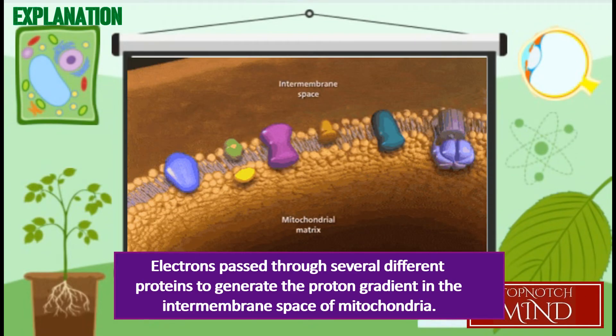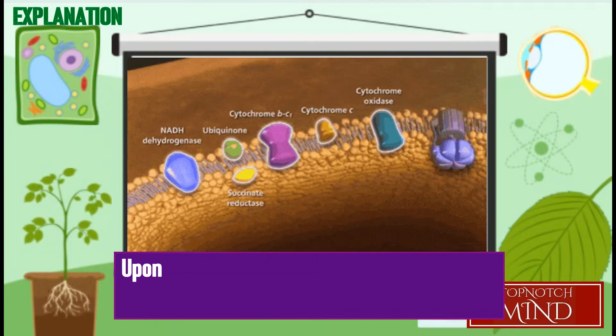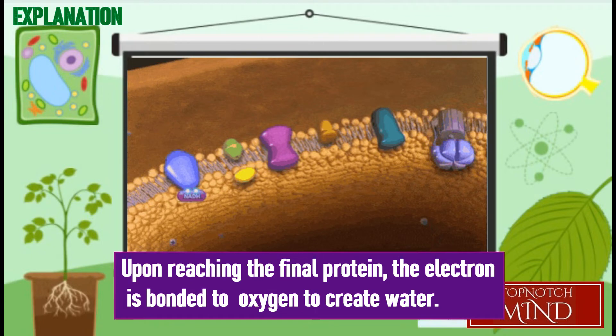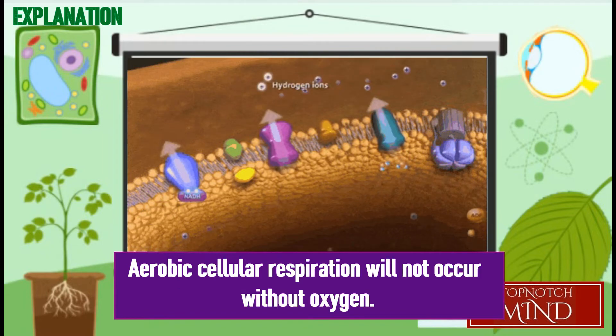Oxygen serves as the final electron acceptor for the electron transport chain. Electrons pass through several different proteins to generate the proton gradient in the intermembrane space of mitochondria. Upon reaching the final protein, the electron is bonded to an oxygen molecule to create water. Without oxygen, there would be nowhere for the electrons to go after being pumped through the electron transport chain, and aerobic cellular respiration would be impossible.